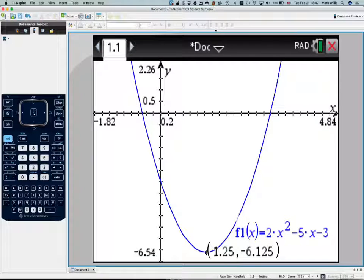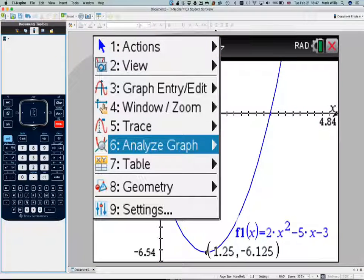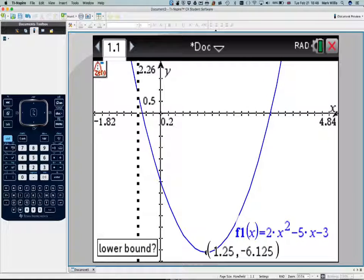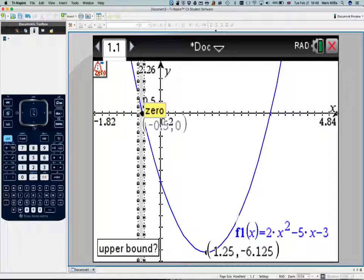Okay, now to find the x intercepts, which is that one there and that one there, we need to do the following. So we go to menu, number 6, analyze the graph. We go to what's known as zeros, press number 1, go to the left, and go to the right.